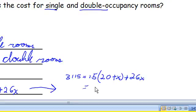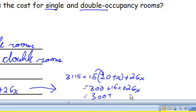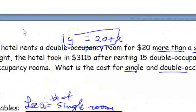$3,115 is equal to 15 times 20 plus x plus 26x. So that is 15 times 20 is 300. We're just distributing. 300 plus 15x plus 26x. And that equals 300 plus, I am so bad at mental math. Some of y'all are way better at mental math than I am. 41x. Is that right? Yeah, that's right. Okay, so we're down to this part. 3,115 equals 300 plus 41x.